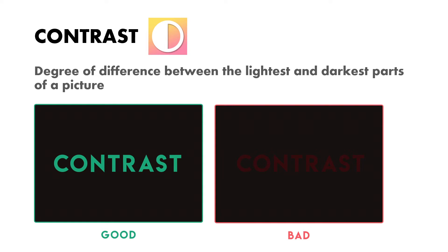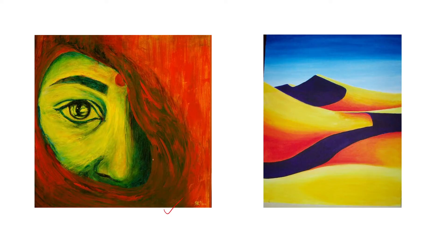Next is contrast. Contrast is the degree of difference between the lightest and darkest parts of a picture. For example, if you use a dark color for one element, the other graphic elements need to be light to be easily differentiated. Too much contrast can look unprofessional. A good contrast example shows clear differentiation; a bad contrast example looks dull or overly bright — like simply using red on a black background, which is too intense. Examples include a face contrasted with red, or dark black contrasted with yellow and red.